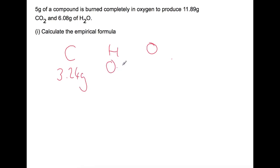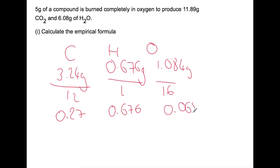We can now use these values that we've just calculated to calculate the empirical formula. So we had 3.24 grams of carbon, 0.676 grams of hydrogen and 1.084 grams of oxygen. We divide each of them by their relative atomic masses to get number of moles. And then divide by the smallest number for each to get the ratio. The smallest number is going to be the oxygen one. Which will lead us to a ratio of 4, 10 and 1. So the empirical formula for this compound will be C4H10O.